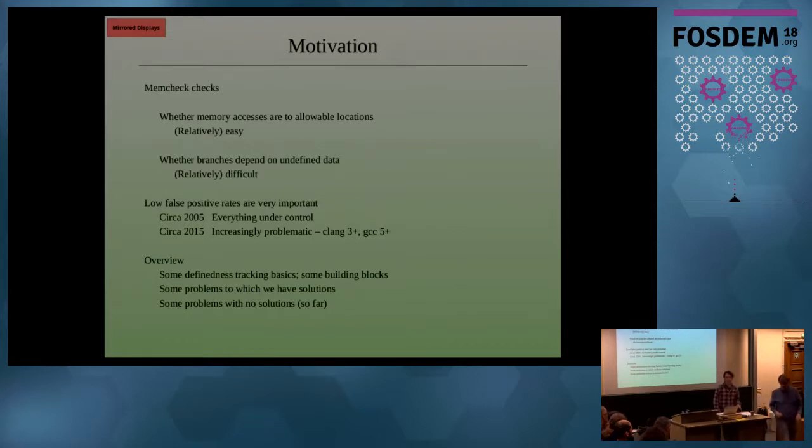So for a tool like MemCheck, we put a lot of effort into making sure that the false positive rate is very low, and in particular, the false positive rate for undefined value errors. I think it's somewhat known for that. So when it comes along and says undefined values here, it's likely to be correct. This is important because lots of false positives make tools less useful for developers. So back in the good old days of 2005, that was all fine. We had most stuff under control. Ten years later, we have Clang 3 and GCC 5 and their successors generating all sorts of problems, some of which are not easy to get rid of.